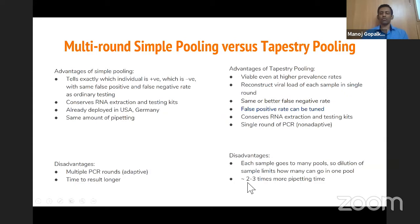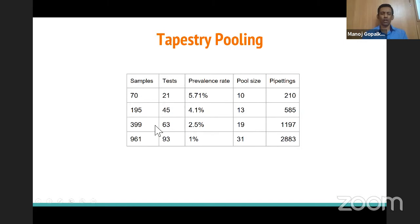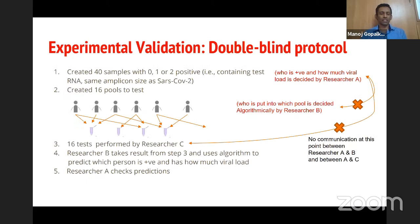Numerical performance: 70 samples in 21 tests at up to ~6% prevalence with pool size ~10; about 200 samples in 45 tests at 4.1% prevalence; about 400 samples in 63 tests at 2.5% prevalence; up to 1,090 samples in approximately 90 tests at around 1% prevalence. Number of pipettings is always three times the number of samples.